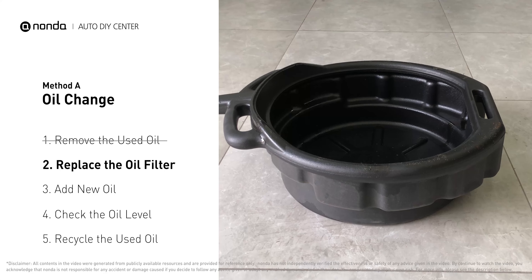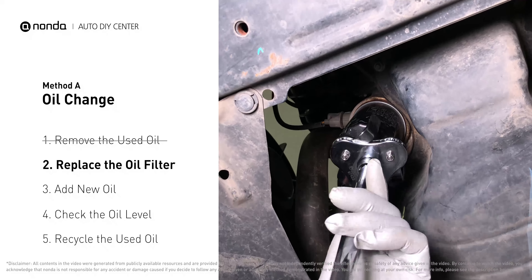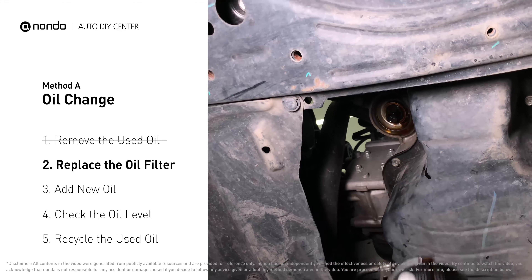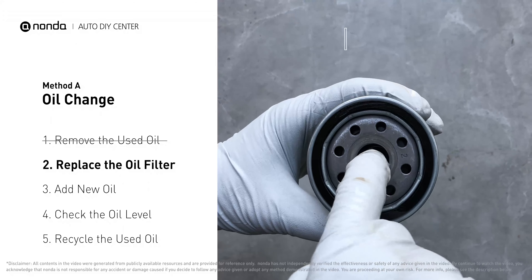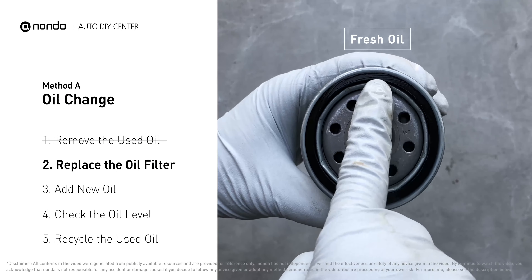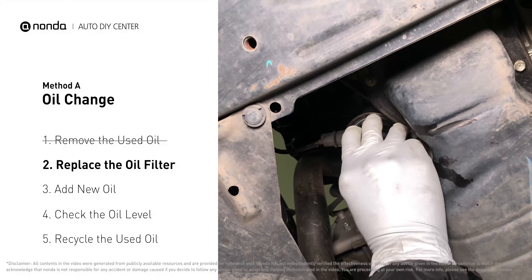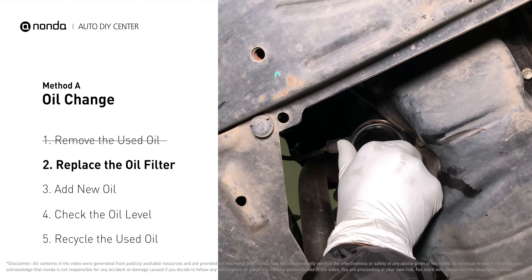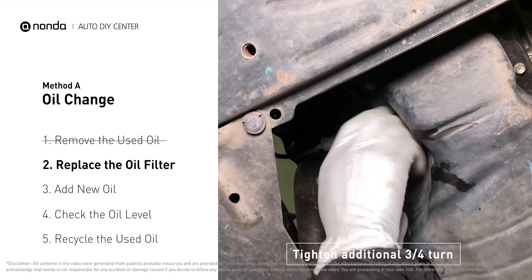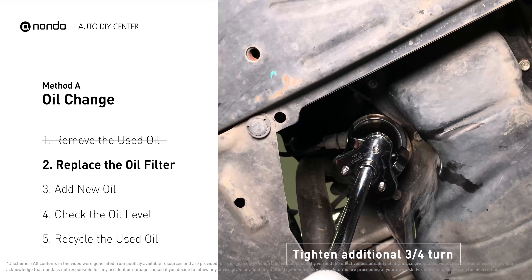The oil filter is usually located beside the oil pan or under the hood of your vehicle near the engine. Place the collection pan under the filter — there will be oil in the filter that could be hot, so it is important that the oil goes into the collection pan. Spread a bit of fresh oil evenly on the new filter's gasket, then install the new oil filter and tighten it an additional three quarters of a turn.